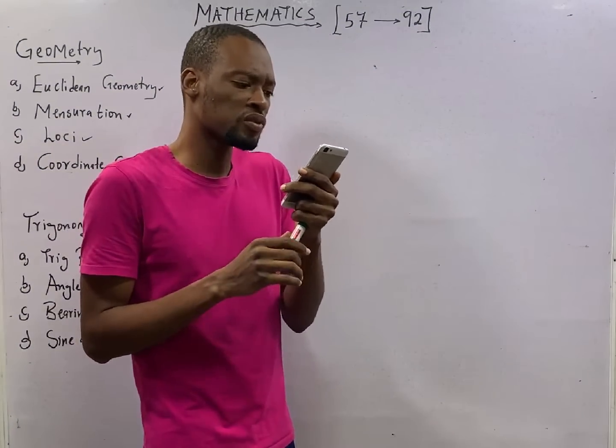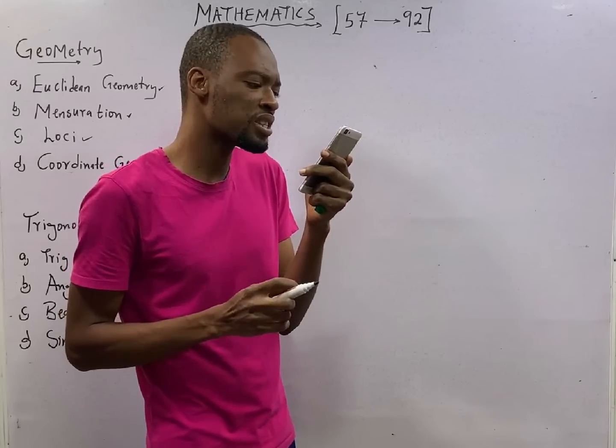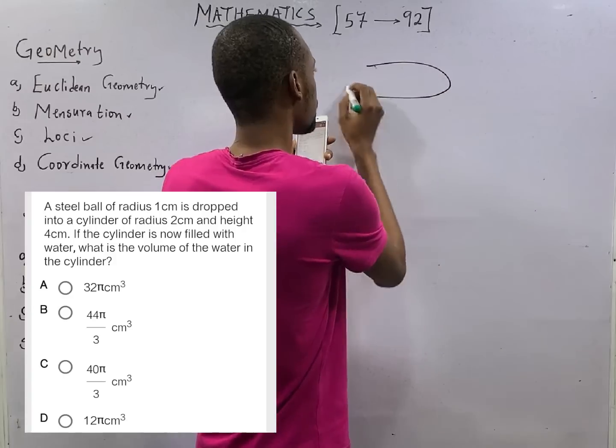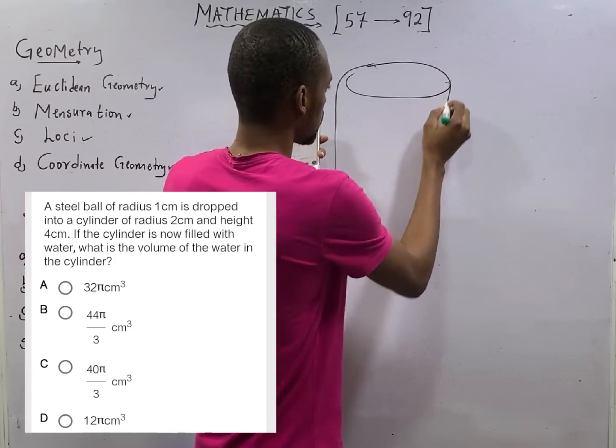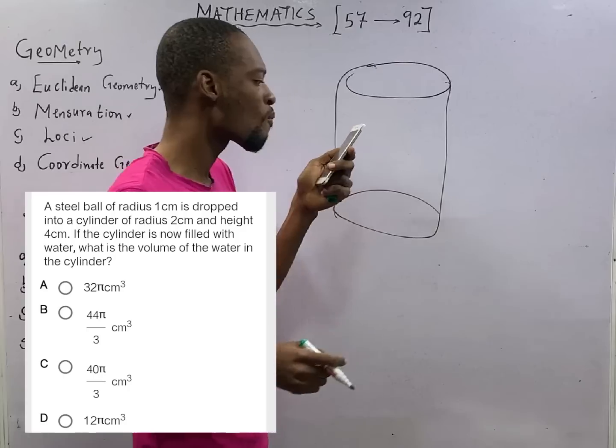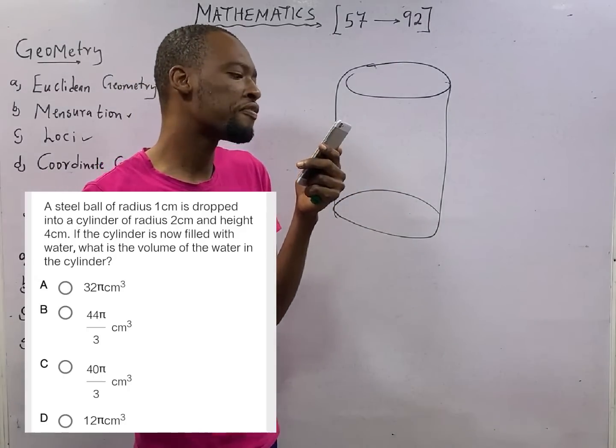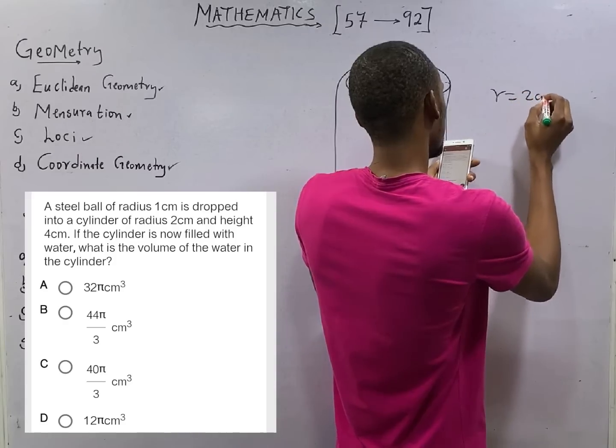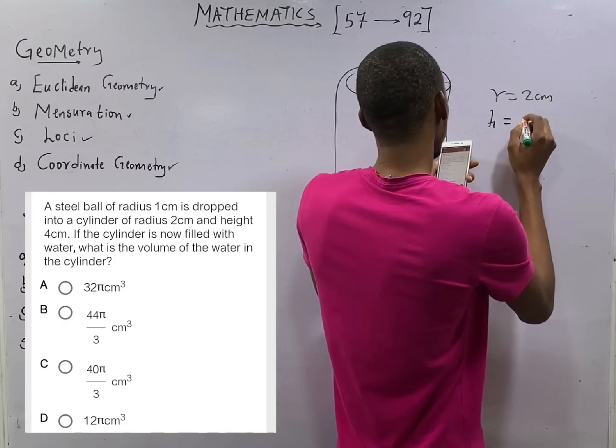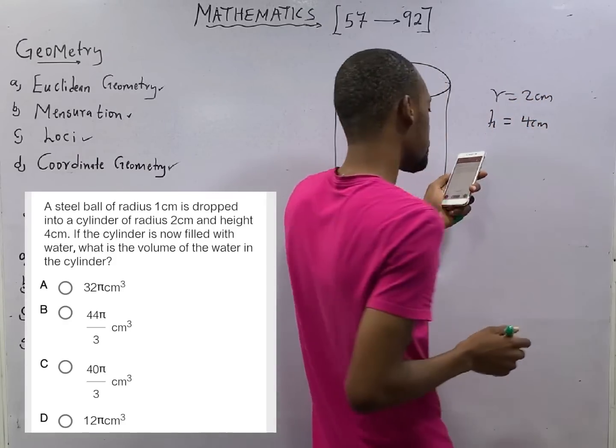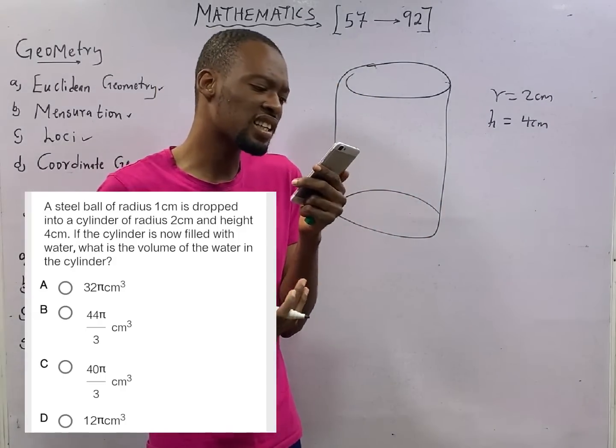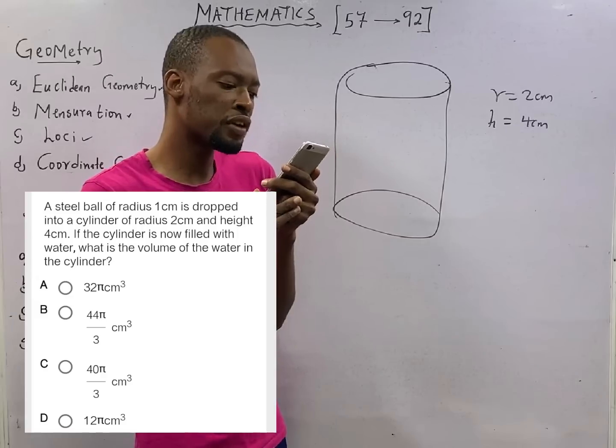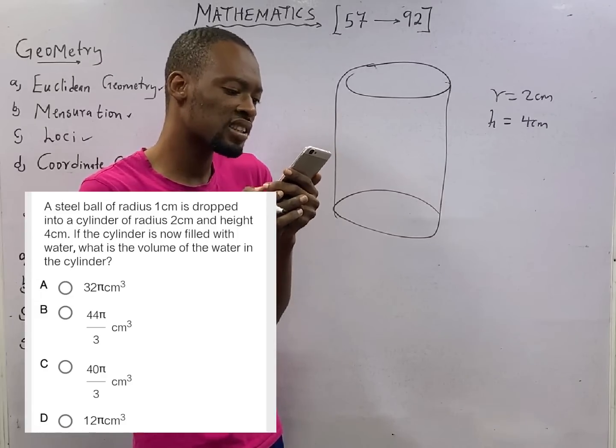2r sin(θ/2). A steel ball of radius 1 cm is dropped into a cylinder of radius 2 cm and height 4 cm. If the cylinder is now filled with water, what is the volume of the water in the cylinder?